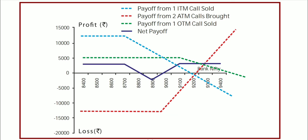Short Call Butterfly is a good strategy. Above the breakeven points your profit, below the breakeven points your loss. The dark blue line is your net payoff, the sky blue line is your one ITM call sold, the red line is your two ATM calls bought, and the green line is your one OTM call sold. That's the end of this video. Have a good day, happy trading. This is Divyans signing off.